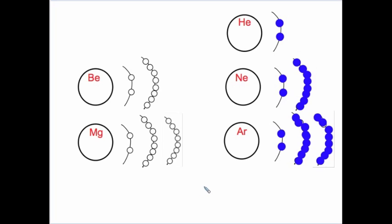Let's compare this to the elements in group two, like beryllium. Beryllium has four protons and four electrons — two in the first shell, and only two in the second shell, even though it can fit eight. Magnesium, atomic number 12, has 12 electrons: two in the first shell, eight in the second, and the last two go into the third shell. Looking at this diagram, you can see why all the group 18 elements are grouped together, group two elements are grouped together, and helium is correctly placed in group 18.